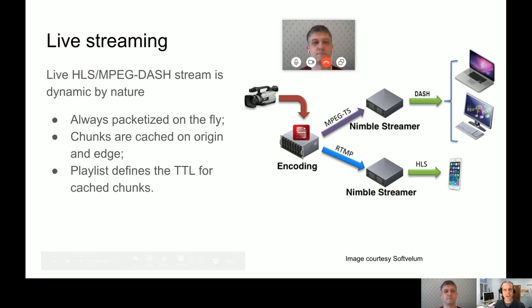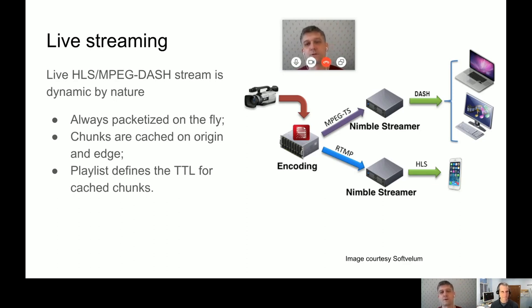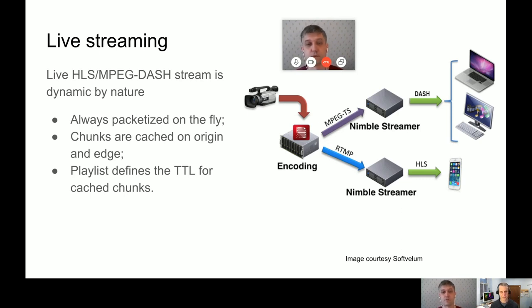This is the live scenario. Live streaming, when we talk about packetizing the content, is always dynamic. You get some content from the encoder or any source you have — a stream in one of the popular protocols like RTMP or RTSP. You continuously have content going into your media server. A software media server like Nimble Streamer needs to take that content, split it into chunks, create a dynamic playlist, and allow other devices to watch it.